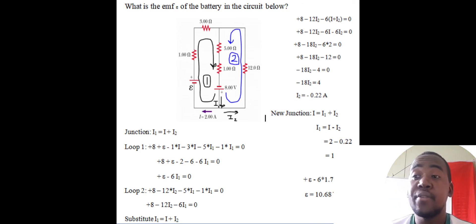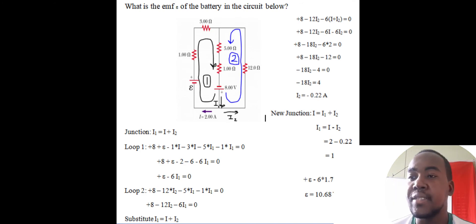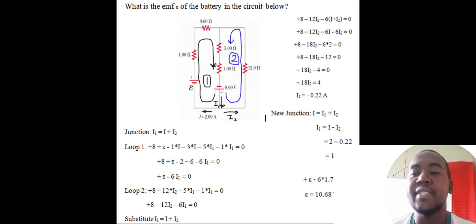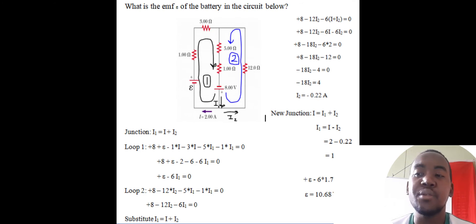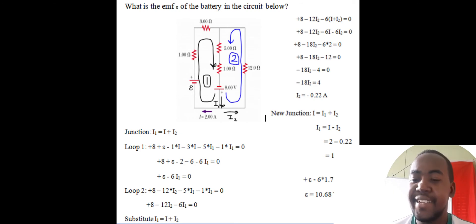Simplifying loop 1: 8 + epsilon minus 2 minus 6 minus 6·I1 = 0. Since 8 minus 2 minus 6 = 0, we're left with epsilon minus 6·I1 = 0.